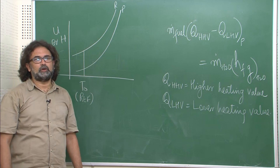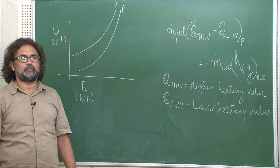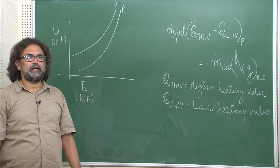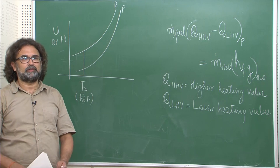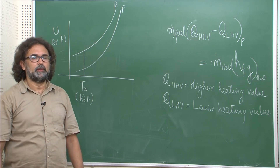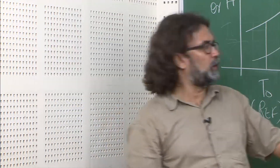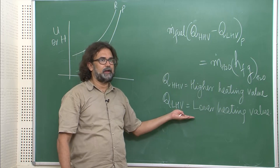We will continue the discussion on the heating values of the combustion process which we have seen in the last lecture. We have seen that there are two heating values, one at constant pressure and one at constant volume, and the difference between them we have understood. Now there is one more distinction which you need to understand, and that distinction is between two quantities called the higher heating value and the lower heating value.